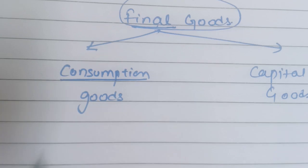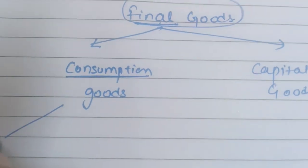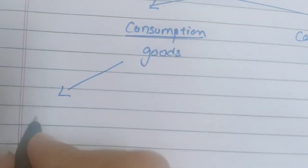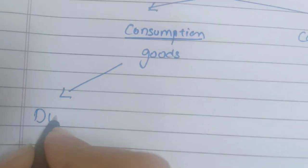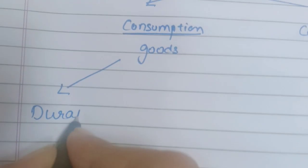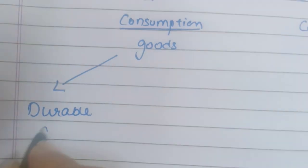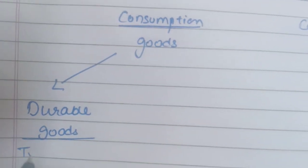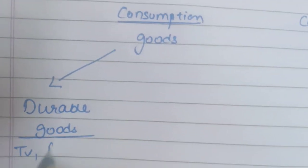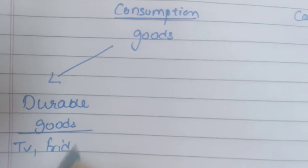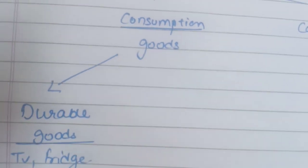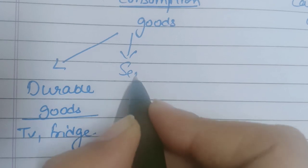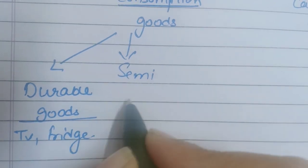Consumption goods are also of types. Some consumption goods are durable goods — for example, TV and fridge. Then there are semi-durable goods as well.